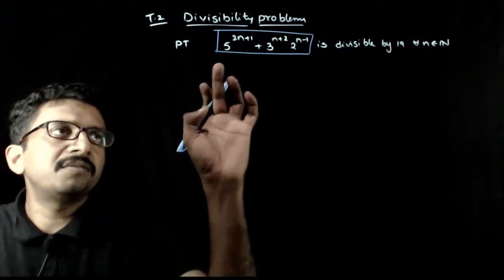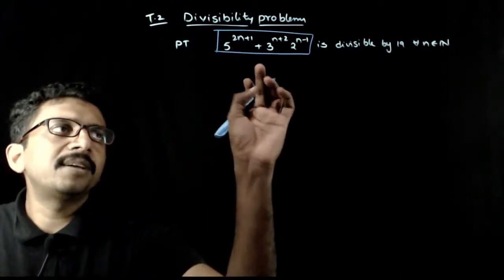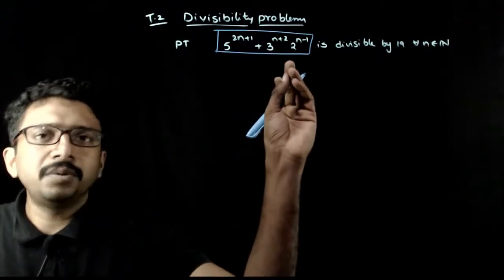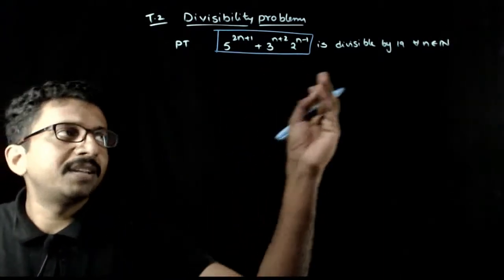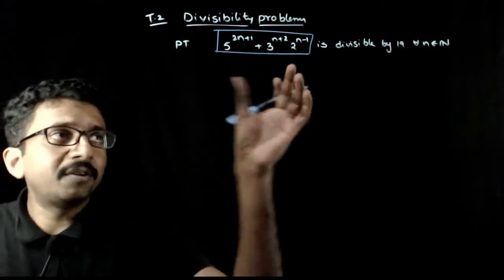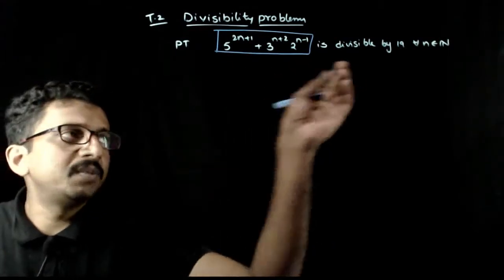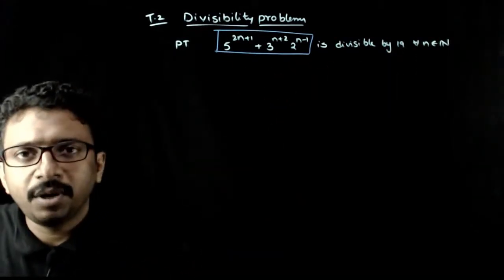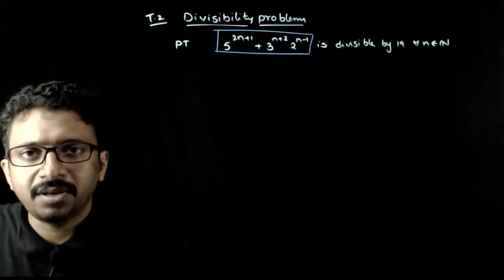In this question, 5^(2n+1) + 3^(n+2) · 2^(n-1), we have to prove that this is divisible by 19 for all n belonging to natural numbers.